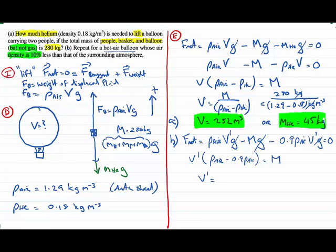Finally, the volume we're trying to find is the mass divided by 0.1 times the density of air. So 280 divided by 0.1 is 2800 divided by 1.29. That ends up being 2170 meters cubed.